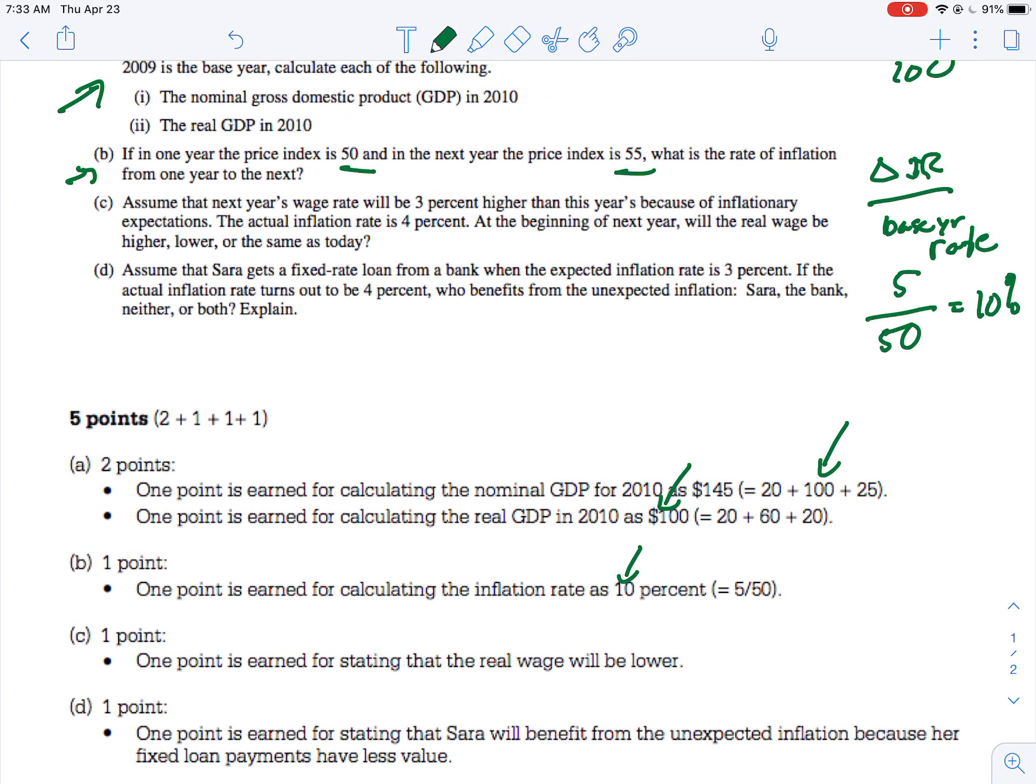Okay, assume that next year's wage rate will be 3%. So we're now on C, 3% higher than this year's because of inflationary expectations. So basically what this means is that businesses think inflation is going to be going up about 3%. So they give their workers a raise, a 3% raise. But it turns out that actual inflation rate is 4%. So at the beginning, will the wage rate be higher, lower, or the same? The real wage rate, so that's talking about purchasing power. And that, of course, means that it will be lower.